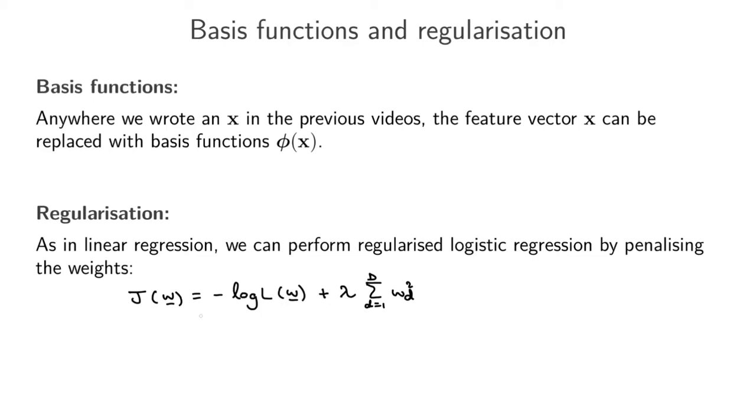You can write it out a little bit more completely just for binary logistic regression. This is going to be equal to—here I've just written out the negative log likelihood, and we're just adding this penalty term here.